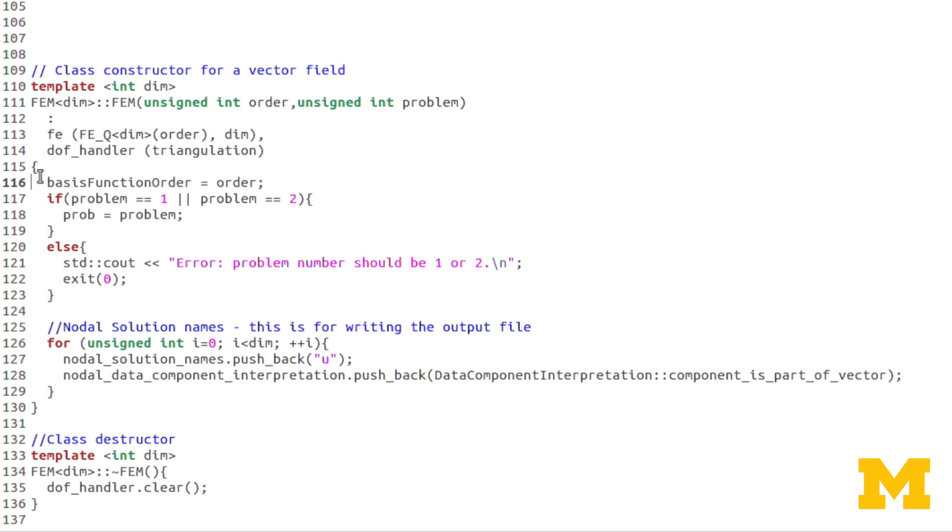Now we'll get into the constructor function itself. Here I'm just passing variables. So order is the input, and now I'm storing it in the global integer basis function order. Same thing for problem. Now you'll notice here I have an if statement. If problem is equal to 1 or problem equals 2, then I will store problem into prob. Otherwise, I output an error saying that the problem number should be 1 or 2. So if you try to input problem part 3, it'll give you an error because obviously there isn't a part 3.